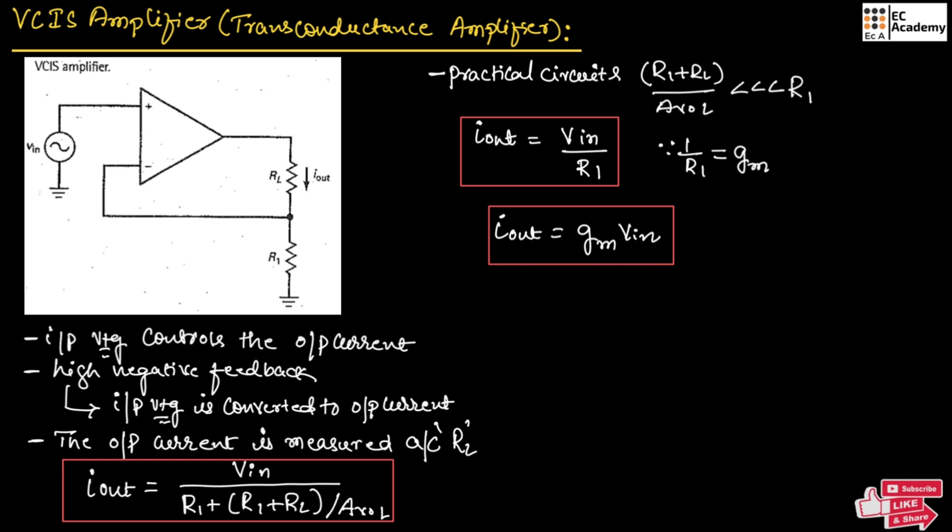For example, if Vin equals 1 volt and R1 equals 1 kilohm, then Iout will equal 1 milliampere.